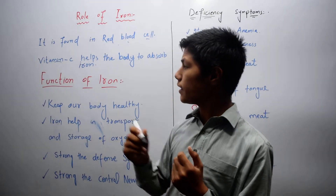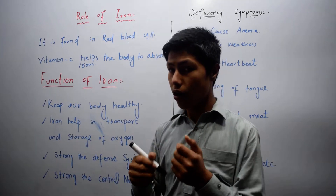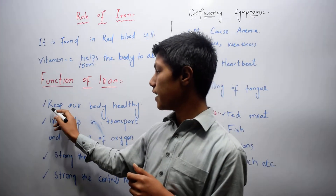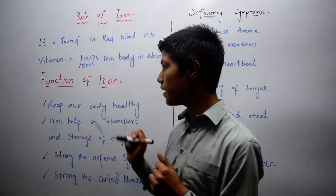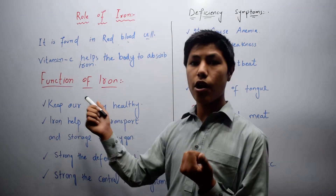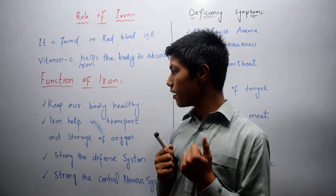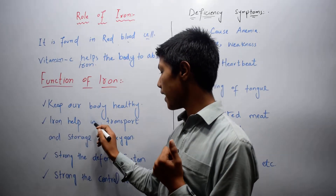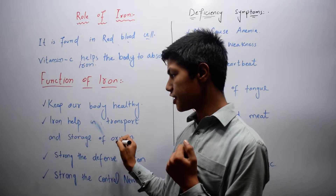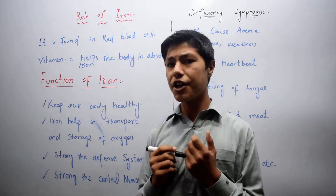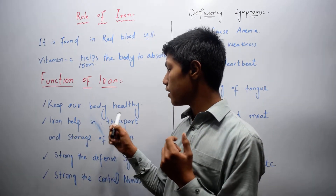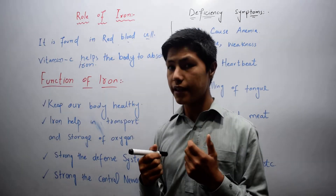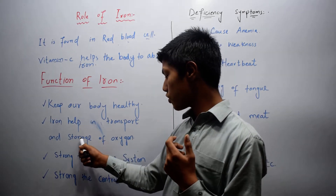Now, what is the function of iron in our body? The first function is it keeps our body healthy. The second one is iron helps in transport and storage of oxygen — it helps in the transport of oxygen in our blood and also stores oxygen.